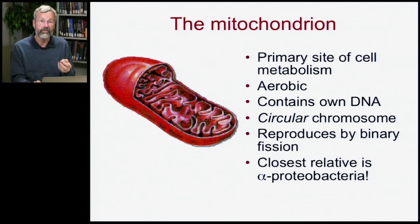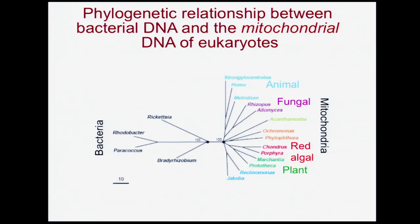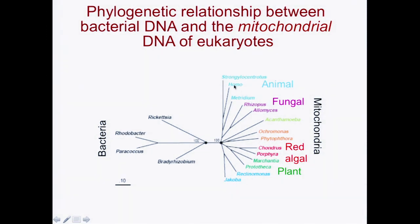In fact, the closest living relative of mitochondria in eukaryotes is an alpha-proteobacteria. When we do phylogenetic analysis of the DNA found in the mitochondria of eukaryotic organisms and compare it to free-living bacteria, we find that animal mitochondria, fungal mitochondria, red algae, and plant mitochondria all share a common ancestor with a particular kind of bacteria that still lives freely in the environment — but at some point infected certain cells and began reproducing entirely within eukaryotic cells.